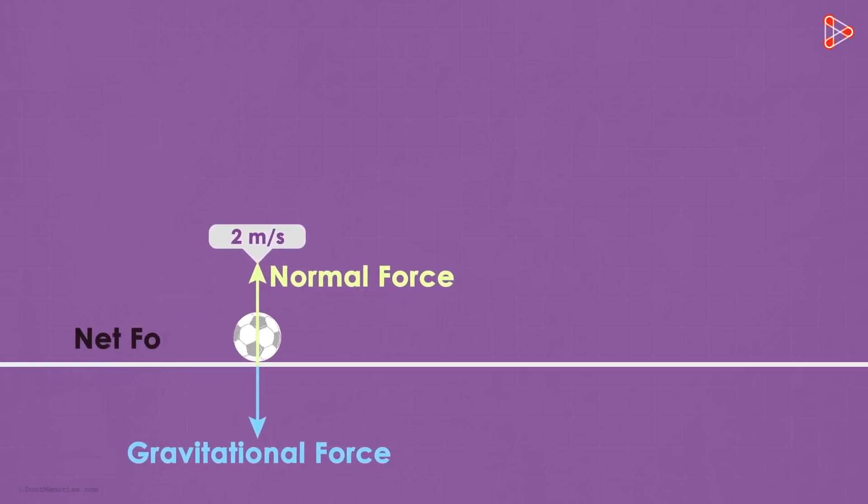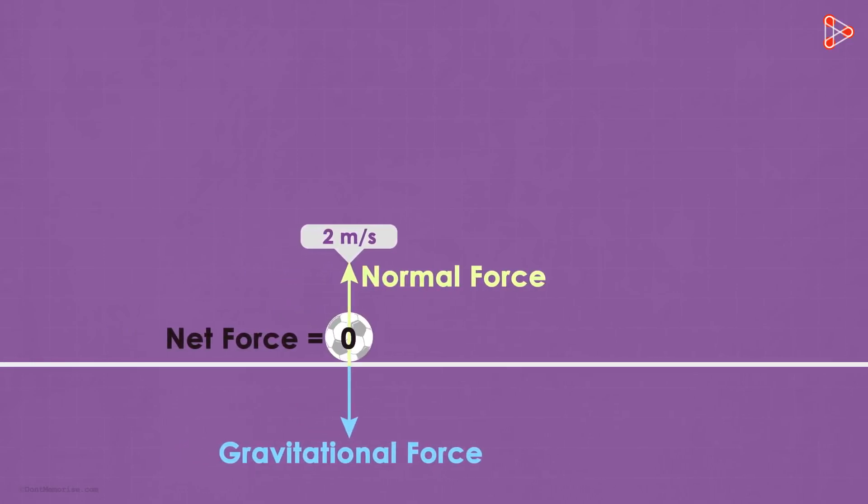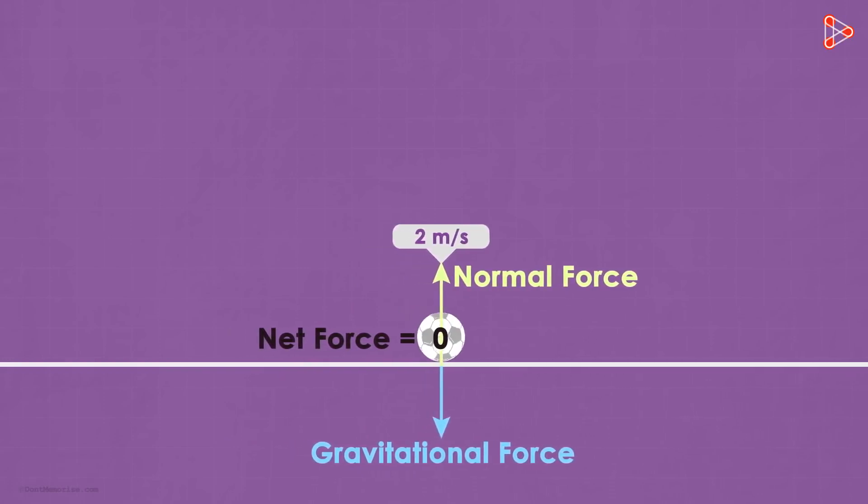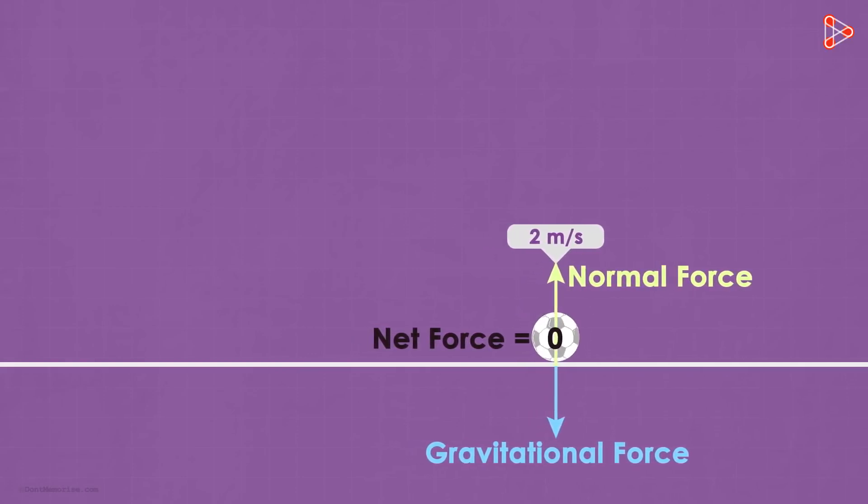The only two forces acting on the ball are the gravitational and the normal forces which net each other out. In this setting, will the ball ever stop moving? No it won't. It will continue to move along the same path at the same speed unless there is another external force which acts on it.